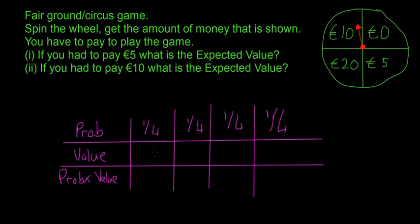So I'll change color just to blue for this. So for the value, we'll just start with 0 here. So you have a 1 quarter or 25 percent chance of getting 0 euro, 10 euro, 5 euro, and 20 euro. It doesn't really matter the order you do these in.